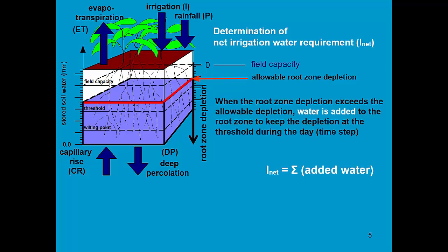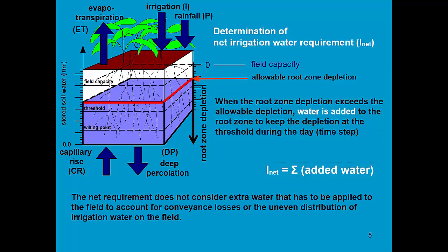At the end of the season, the sum of the added water are the net irrigation requirements. These are net requirements because they do not consider extra water that has to be applied to the field to account for conveying losses or the uneven distribution application losses of the irrigation water on the field.